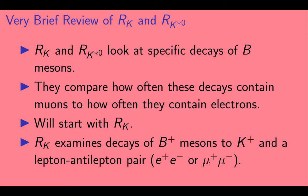We'll start with RK. RK examines decays of charged B plus mesons to a charged kaon, called a K plus, and a lepton-anti-lepton pair. So either an electron-positron pair, denoted E plus E minus, or a muon-anti-muon pair, denoted mu plus mu minus.